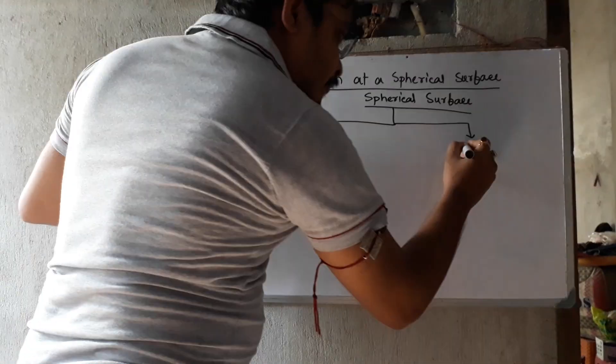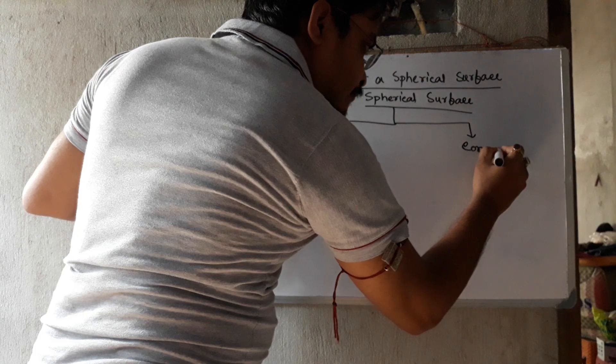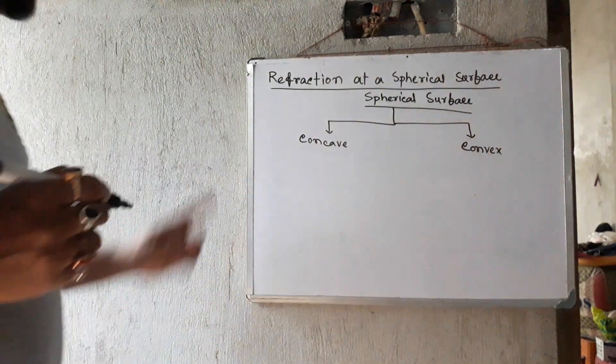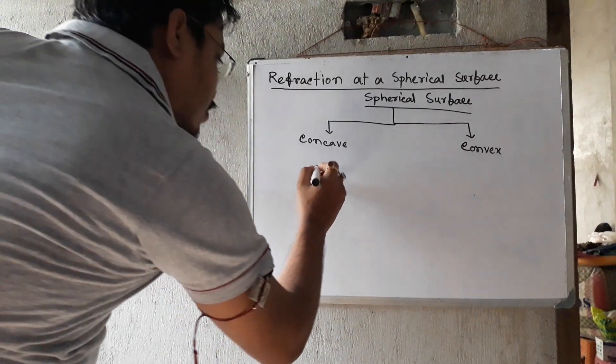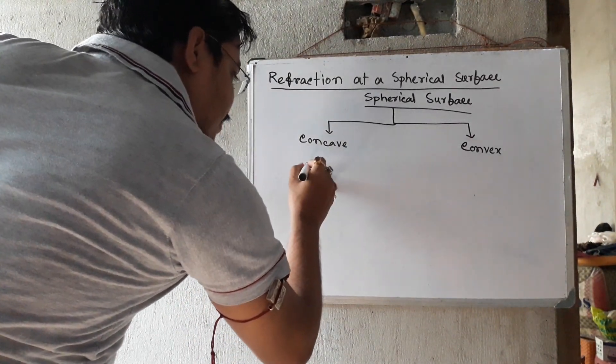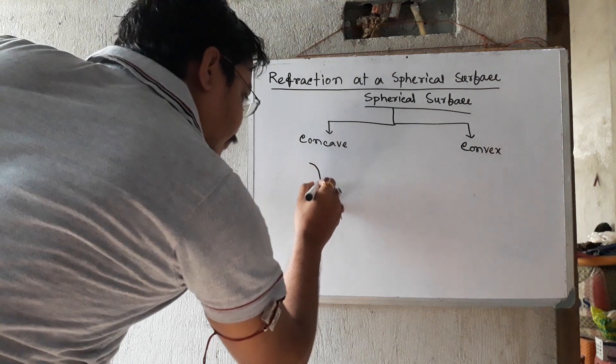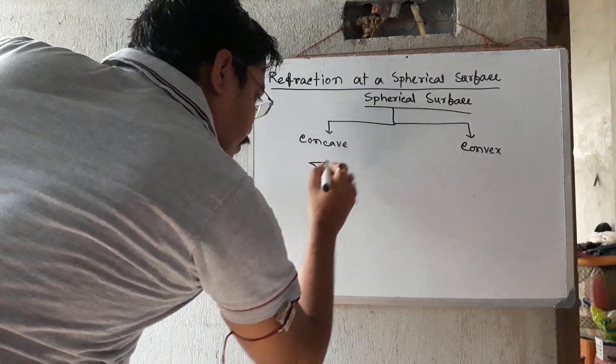Concave and convex. Concave and convex are different spherical surfaces. You can see the spherical surface here.